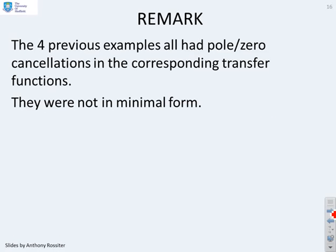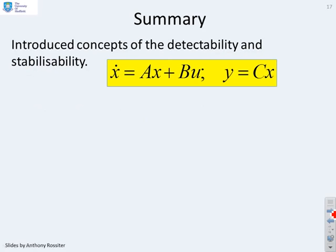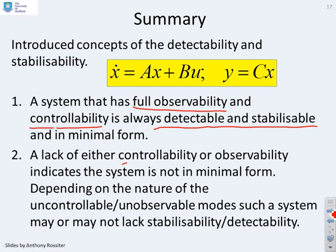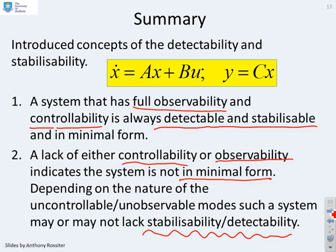In summary, all four previous examples had pole-zero cancellations in the corresponding transfer functions and were not in minimal form. We have introduced the concepts of detectability and stabilizability and shown that a system with full observability and controllability will always be detectable, stabilizable, and in minimal form. A lack of either controllability or observability indicates the system is not in minimal form, and depending on the nature of the uncontrollable or unobservable modes, the system may or may not lack stabilizability and detectability.